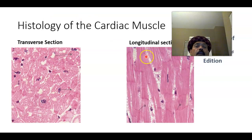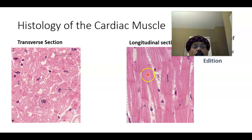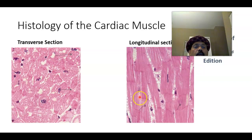This is a longitudinal section of the cardiac muscle. We can see the branching pattern and the centrally located nucleus. At the side of the nucleus there is a collection of glycogen.